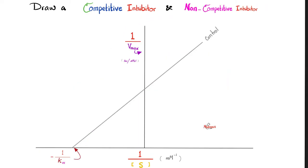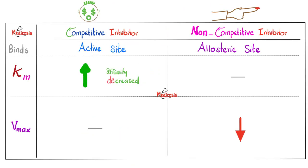On the Lineweaver-Burk, the competitive inhibitor line intersects the control at the y-axis — Km goes up, Vmax does not change. The non-competitive inhibitor intersects the control at the x-axis — Vmax goes down, so 1/Vmax goes up. In summary: competitive inhibitors bind the active site reversibly, decrease affinity, raise Km, and leave Vmax unchanged. Non-competitive inhibitors bind the allosteric site (or sometimes the active site irreversibly), do not change affinity or Km, but decrease Vmax because the number of available enzymes decreases.